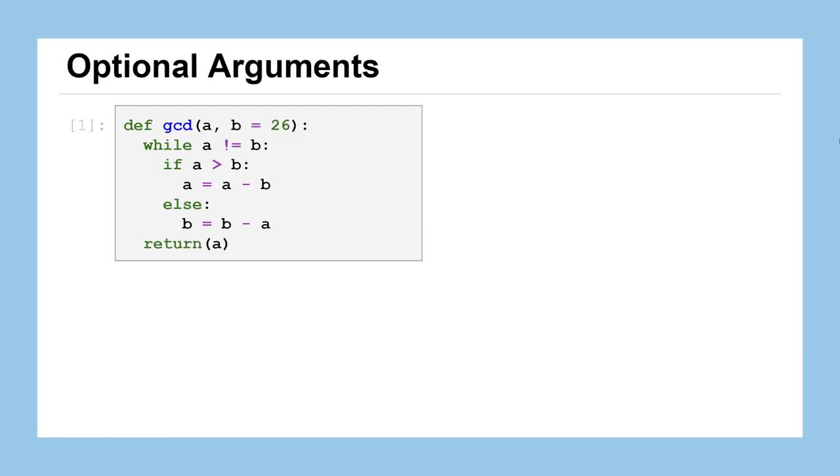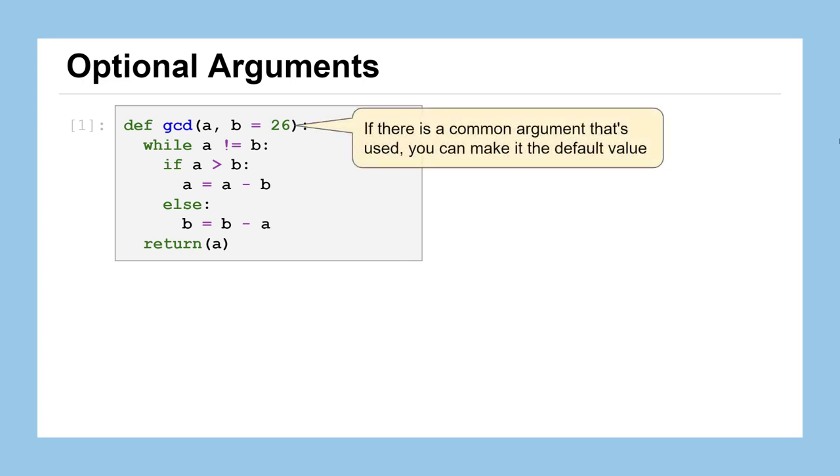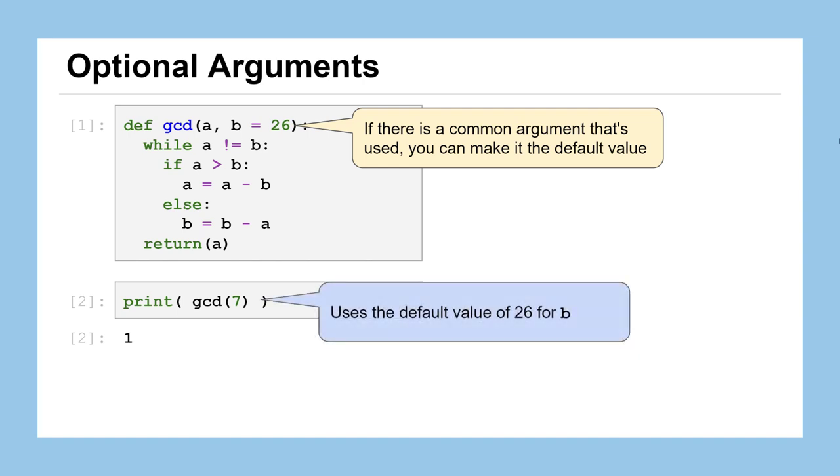The last aspect of functions that we'll be covering in this lesson are what are called optional arguments. You can see we have our gcd function, the return statement is now in place instead of the print statement, but the one thing that's very different is in the header or the definition line of the function. Instead of having gcd and then the two parameters just a and b, we've replaced b with b equals 26. We're going to be doing this when there's a common argument that's going to be passed to this function. We can make it the default value. So you can see the way that we've done that is just replacing the name of the parameter by itself to the name of the parameter as an assignment statement b equals 26. Now when we call this function, we only need to specify the non-default argument. So in this case just a and so the number seven here will be passed to the parameter a and b will take the default value of 26 since we didn't specify anything differently and the function now runs as usual.